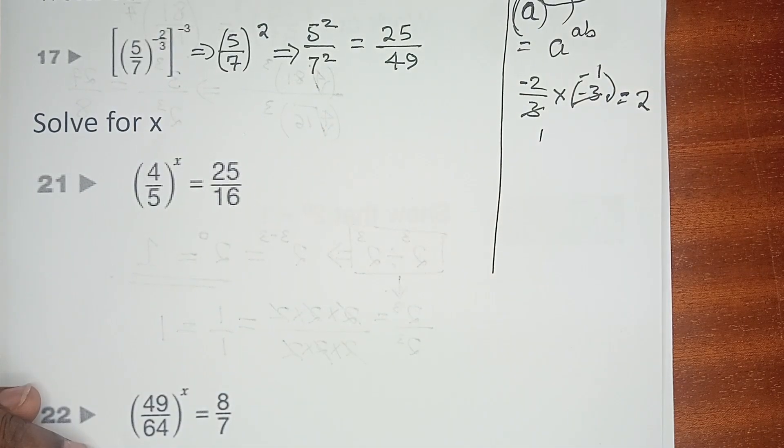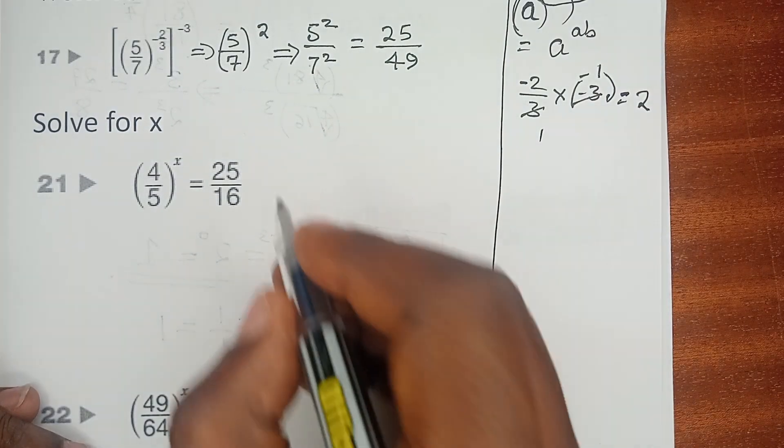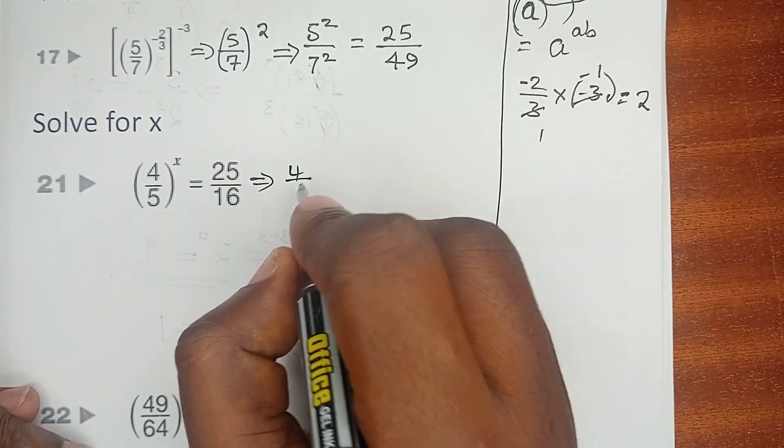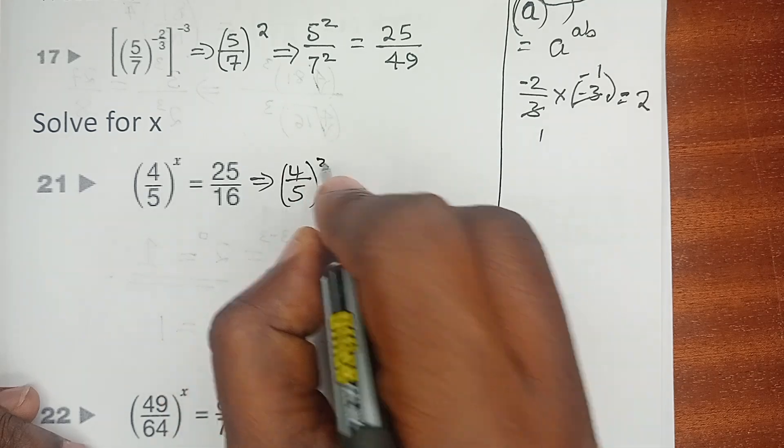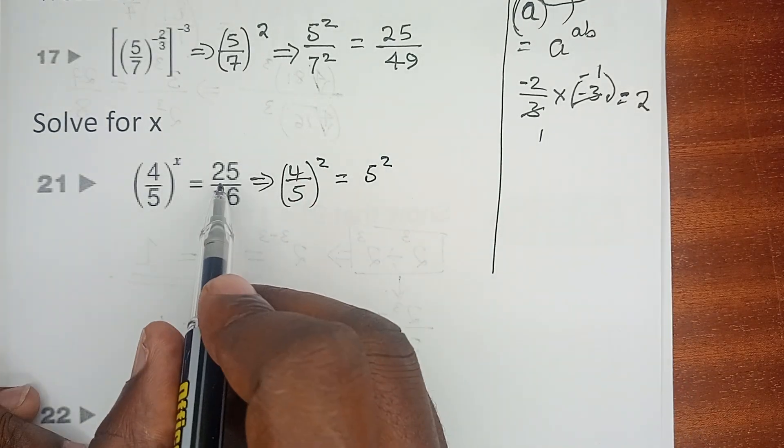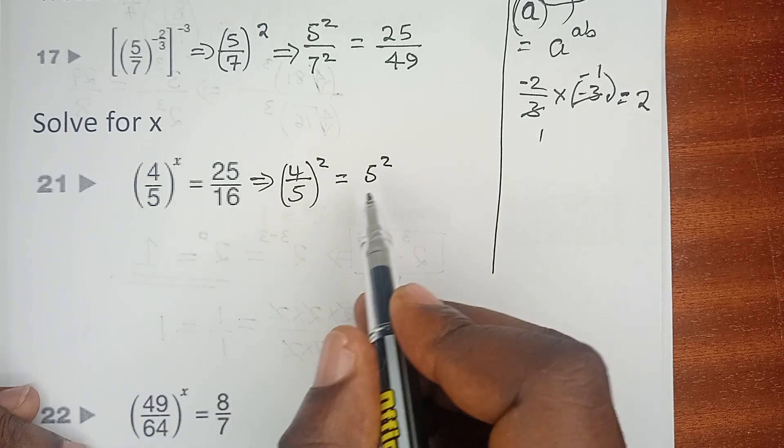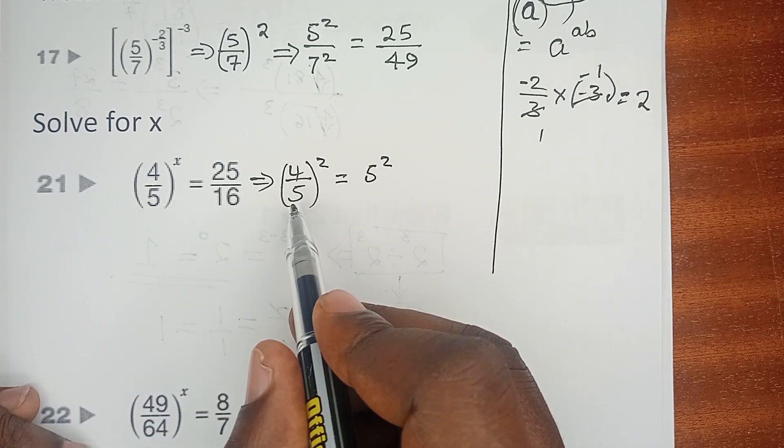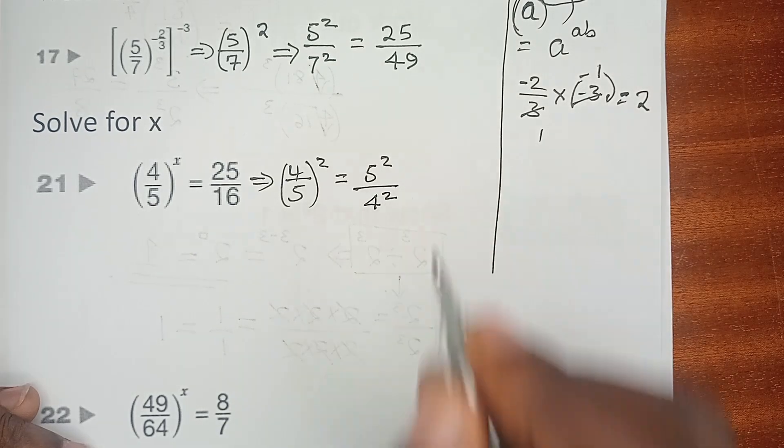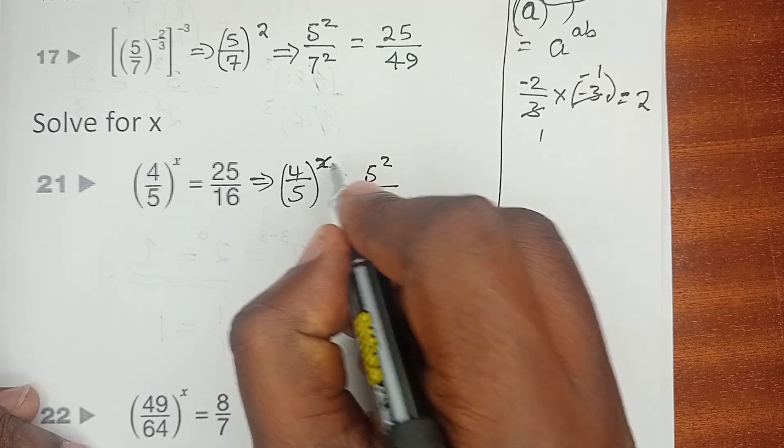We know that 4 is so much related to 16, and 5 is so much related to 25. So before we can even flip the terms, we can rewrite this as (4/5)^X equals 5 squared over 4 squared.